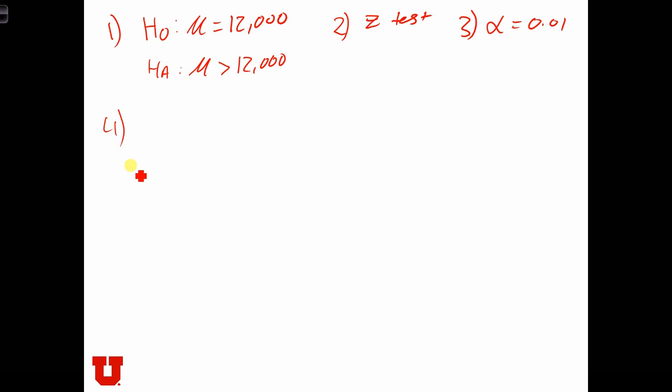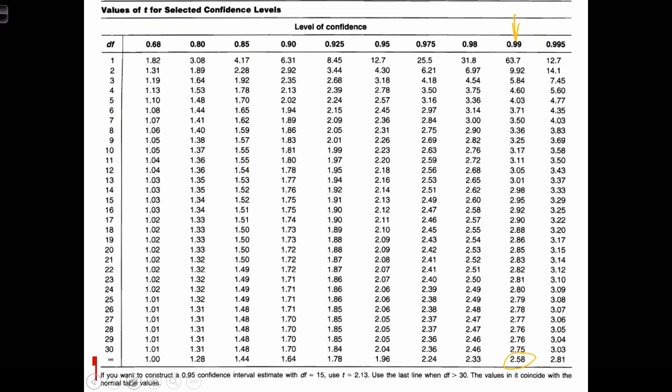Step four: let's draw the picture. So it's a right-tailed test, so we're going to have one critical value over here, and we're going to have 1% of the area over there. Based on this, we can use the 98% confidence because that's going to put 1% in each tail. So the critical value is 2.33.